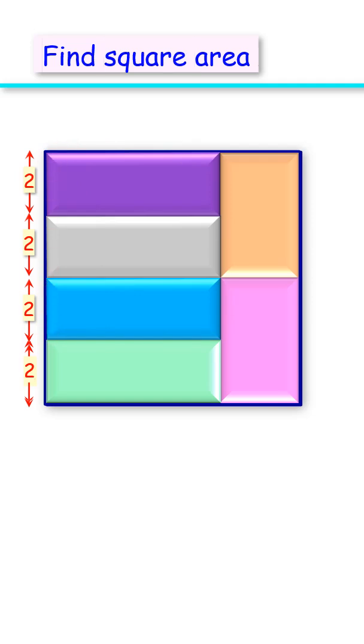Now the total height of the square is four times two, or eight centimeters, and thus area of square is eight squared, or 64 centimeters squared. And that's our answer.